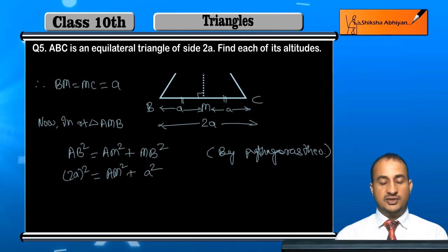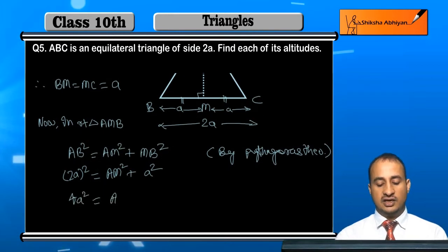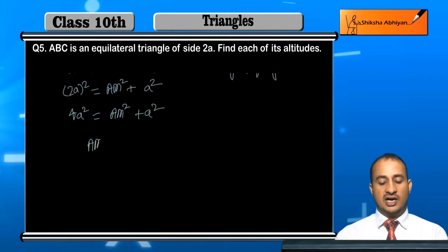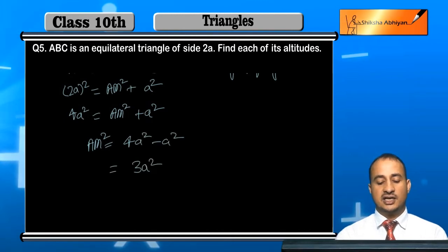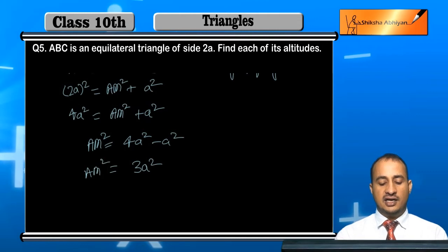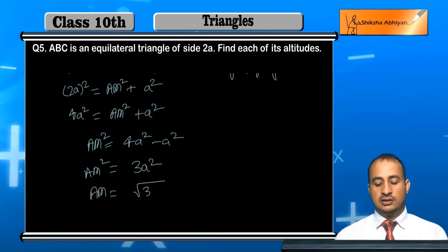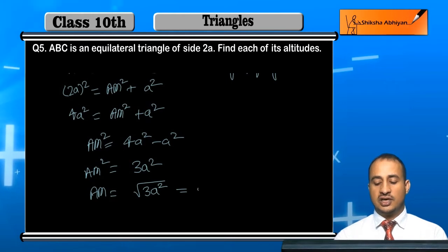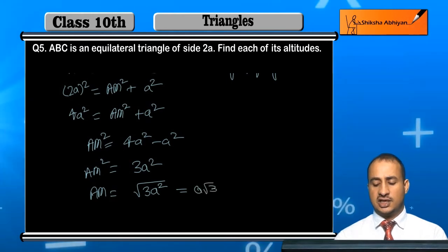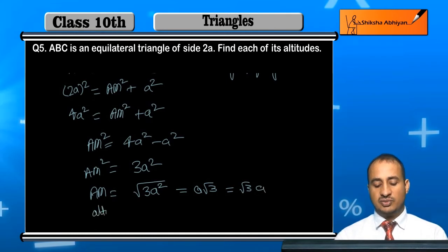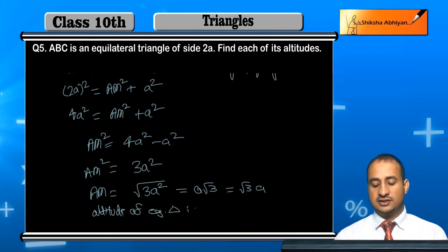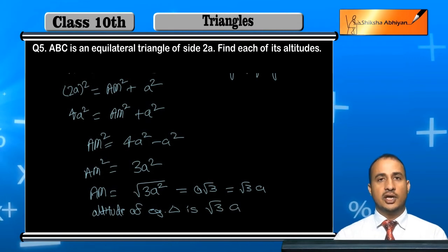So 4a² = AM² + a². Therefore AM² = 4a² − a² = 3a². Taking the square root, AM = √3 · a. So the altitude of the equilateral triangle with side 2a is √3a.